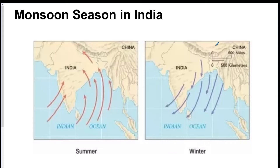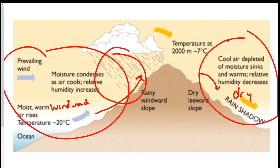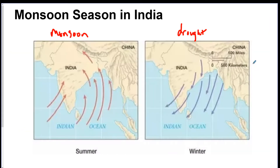Monsoons generally happen in India — that's your number one example. It's a season, so sometimes India has a monsoon season and sometimes it has a drought. Monsoons are associated with tons of rain, while a drought is associated with really dry conditions. Another word for really dry is arid — like the leeward side of a mountain. Monsoons are basically a giant version of a land breeze and sea breeze.